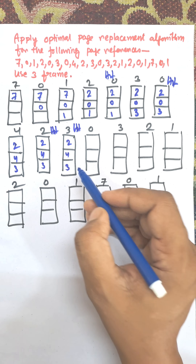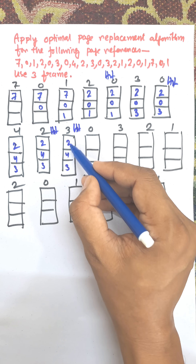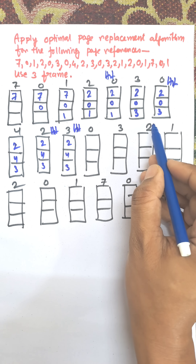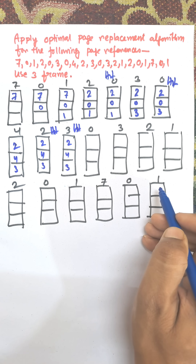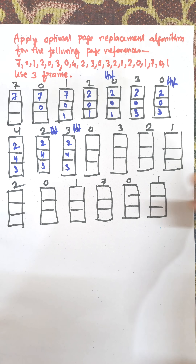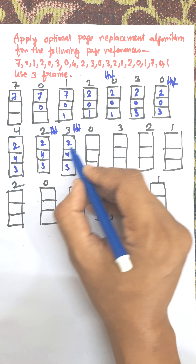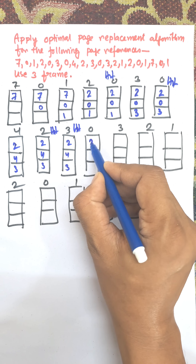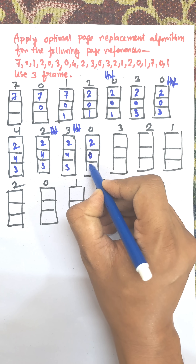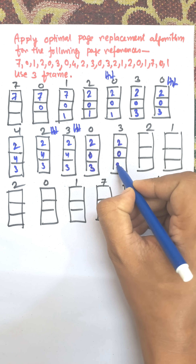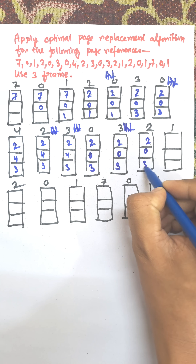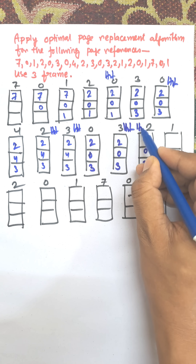Now 0 needs to be loaded. From frames 2, 4, 3 — looking ahead, 3 is available, 2 is available, but 4 is not available in the remaining future sequence. So 4 will be replaced by 0. 3 is already in memory — that is a hit. 2 is already in memory — that is a hit.